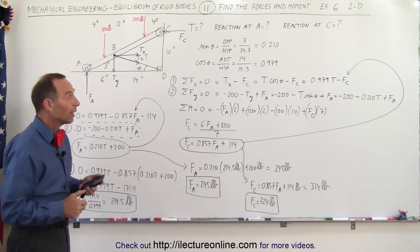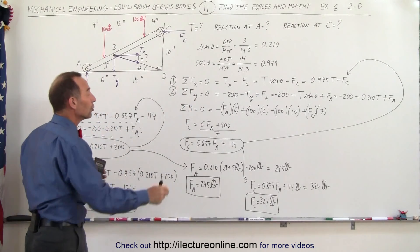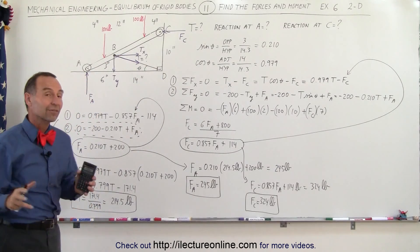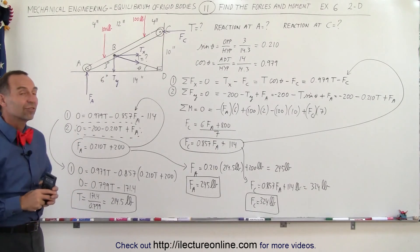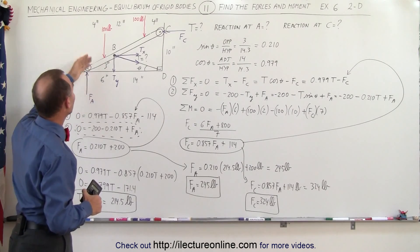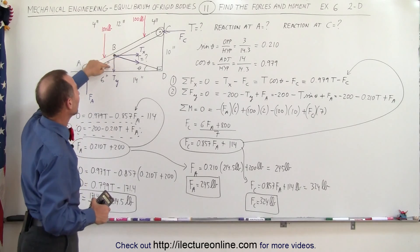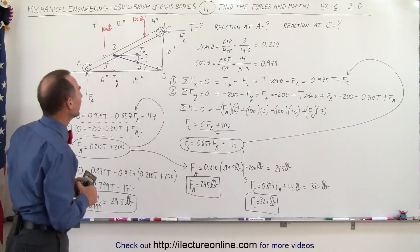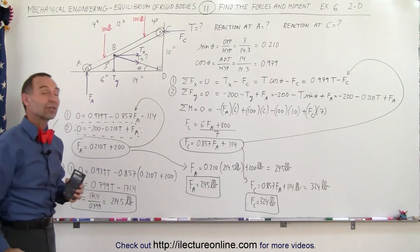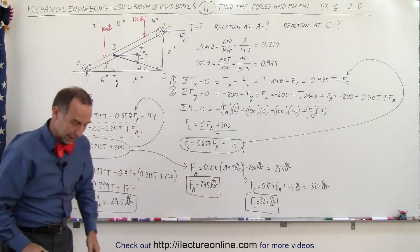It's not a short problem, but if you follow the principles — the sum of forces in the x-direction, the sum of forces in the y-direction, and when there's a third unknown, the sum of moments about some point — you can solve it. I picked point B. The tension is 214.5 pounds, F sub A is 245 pounds compensating for the downward loads and cable's y-component, and F sub C is 324 pounds holding back the horizontal cable pull. That's how we do that problem.